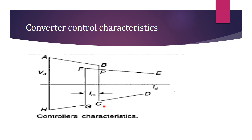From C to D, the minimum extension angle controlling is done. During the first instance, minimum extension angle applies. Whenever a station acts as inverter, minimum extension angle controlling will be done; whenever it acts as rectifier, constant current controlling will be done.